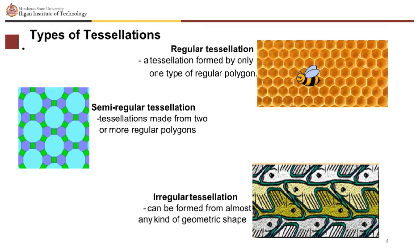The types of tessellations are as follows. Regular tessellation is a tessellation formed by only one type of regular polygon. Semi-regular tessellations are tessellations made from two or more regular polygons.